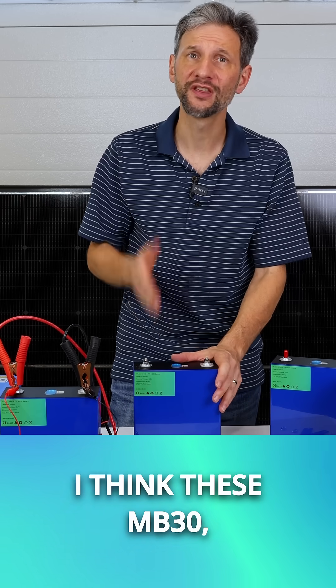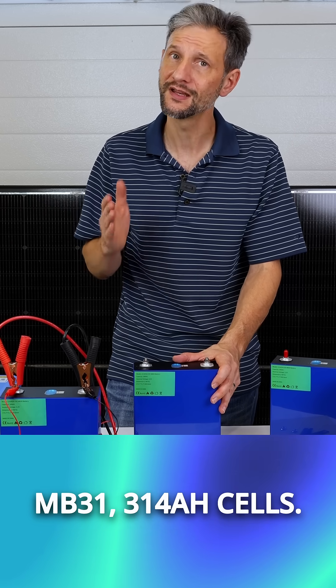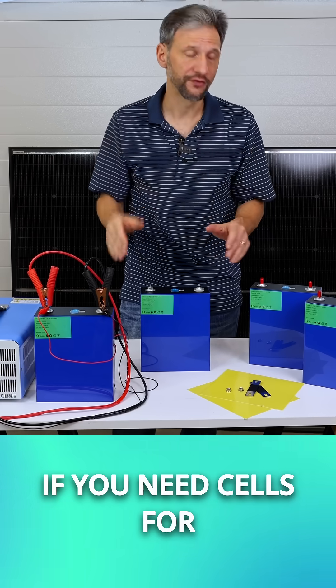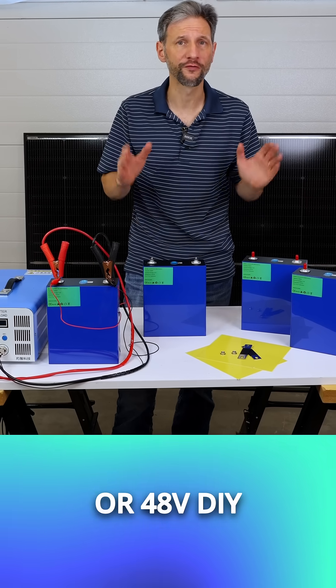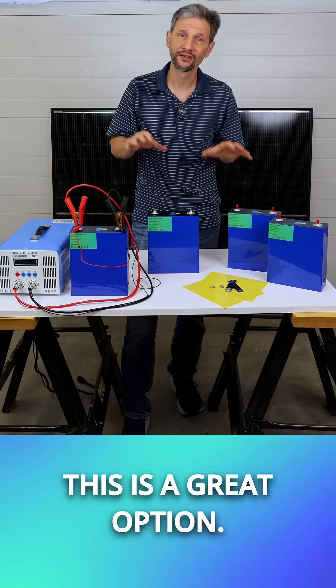I think these MB30 306 amp hour cells are an even better value than the MB31 314 amp hour cells. If you need cells for your 12 volt, 24 volt or 48 volt DIY battery or DIY battery kit, this is a great option.